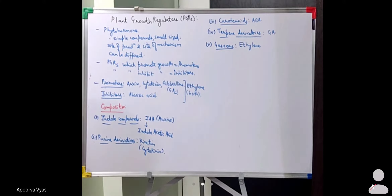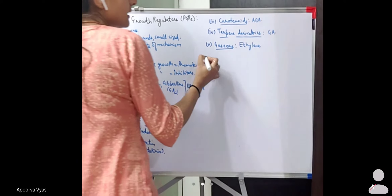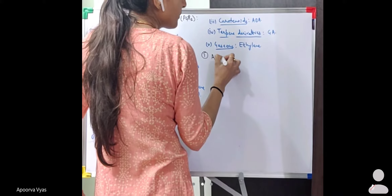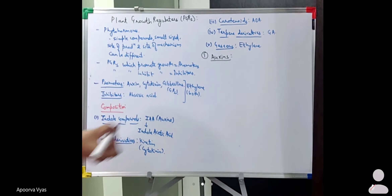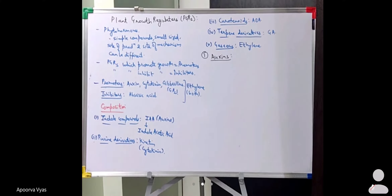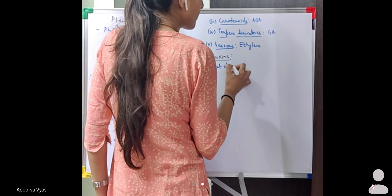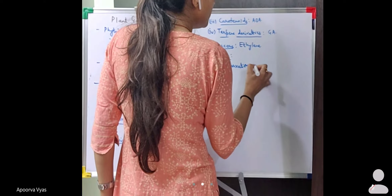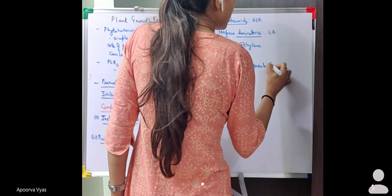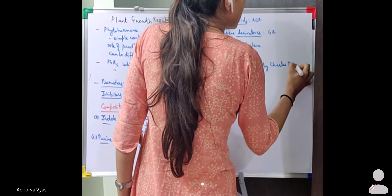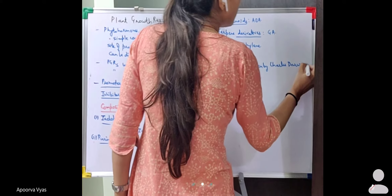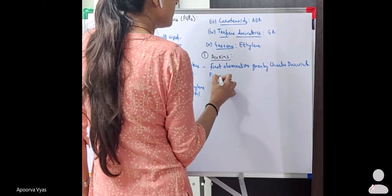Now let's study each phytohormone in detail. The first observations were given by Charles Darwin and his son Francis Darwin.